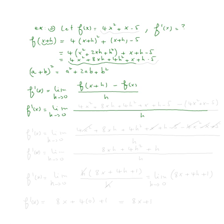Now f of x plus h is right here — we just found it. So it's four x squared plus eight x h plus four h squared plus x plus h minus five. Then we subtract f of x — don't forget the parentheses — so that is minus four x squared plus x minus five.